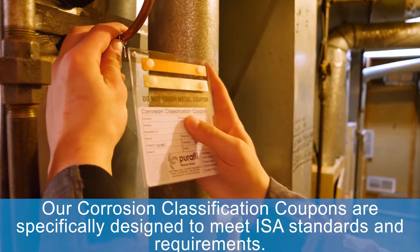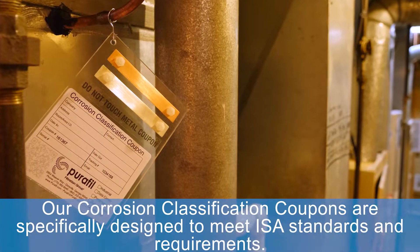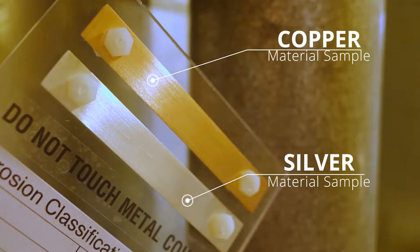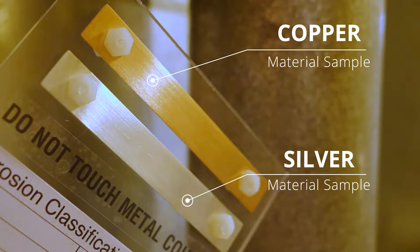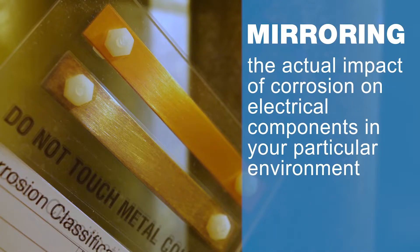Our corrosion classification coupons are specifically designed to meet ISA standards and requirements, utilizing copper and silver material samples that are tested against the environment, mirroring the actual impact of corrosion on electrical components in your particular environment.